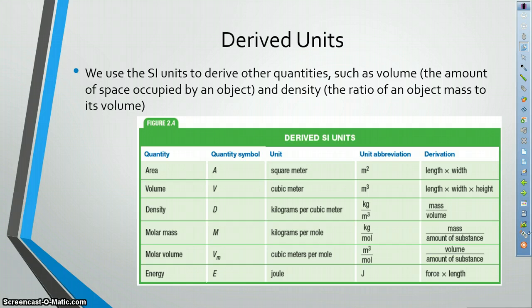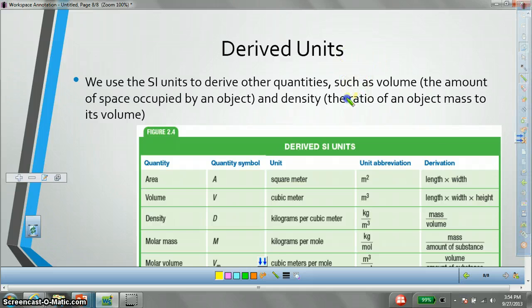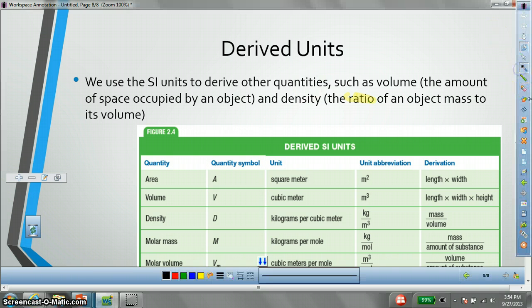Then there are derived units. We use our regular SI units to derive other quantities, such as volume, which is the amount of space occupied by an object, and density, which is the ratio of an object's mass to its volume. And look at this word right here. You've got ratio. The word ratio. Ratio, whenever you see that word, you know that you're going to divide. So, density, being the ratio of mass to volume, is equal to mass divided by volume.